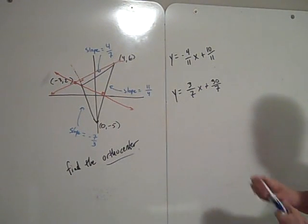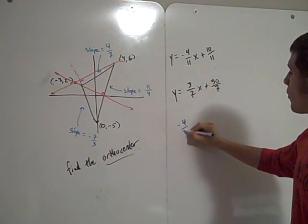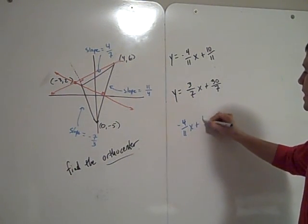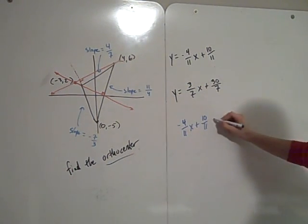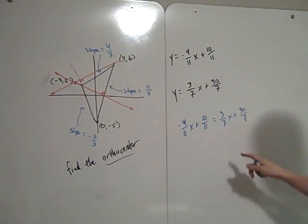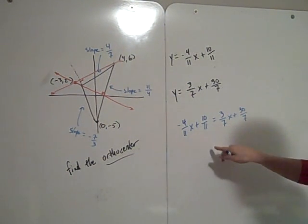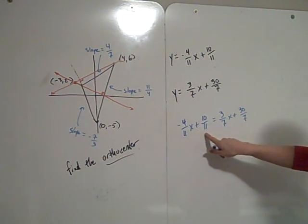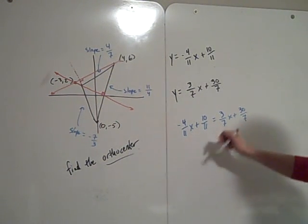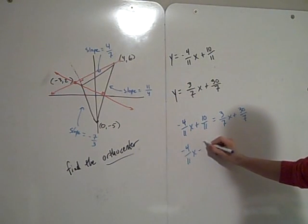Set negative 4 over 11x plus 10 over 11 equal to 3 over 7x plus 30 over 7. To get x by itself, subtract 3 over 7x from both sides and subtract 10 over 11 from both sides. You have negative 4 over 11x minus 3 over 7x.